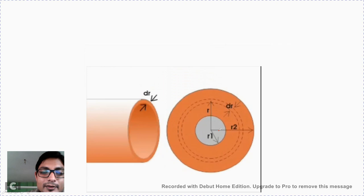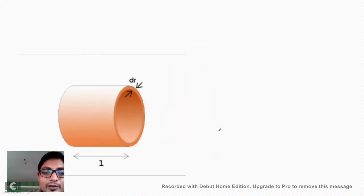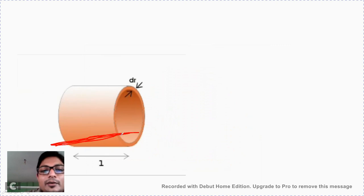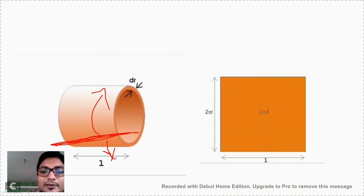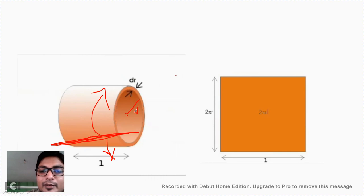To obtain the area, we consider a small cylindrical shell of thickness dr over a cable length L. If we cut and unroll this cylindrical shell, it forms a rectangular shape. The horizontal length remains L, while the width of the rectangle equals the circumference of the cylinder, which is 2 pi R. Therefore the surface area of this portion is 2 pi R times L. So A equals 2 pi RL — remember this.